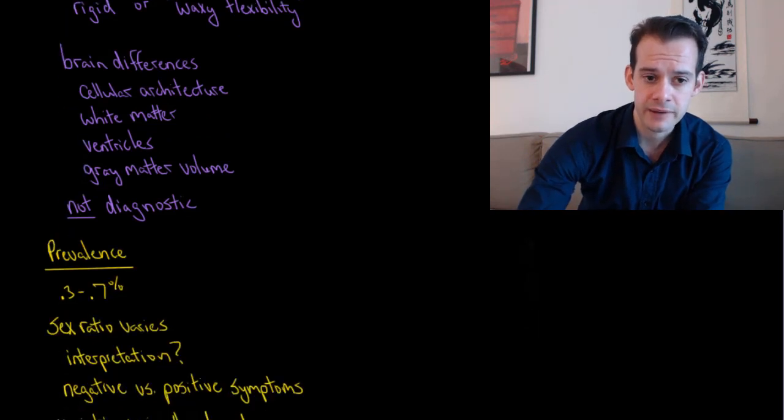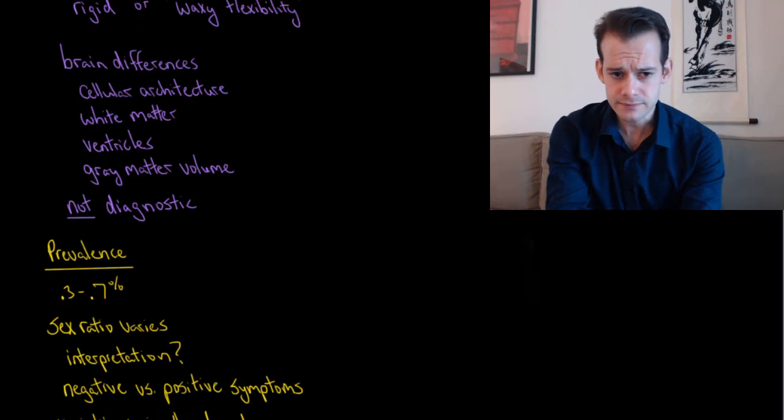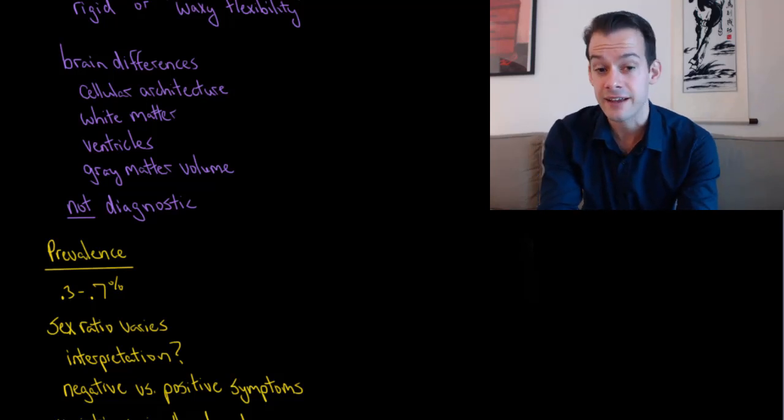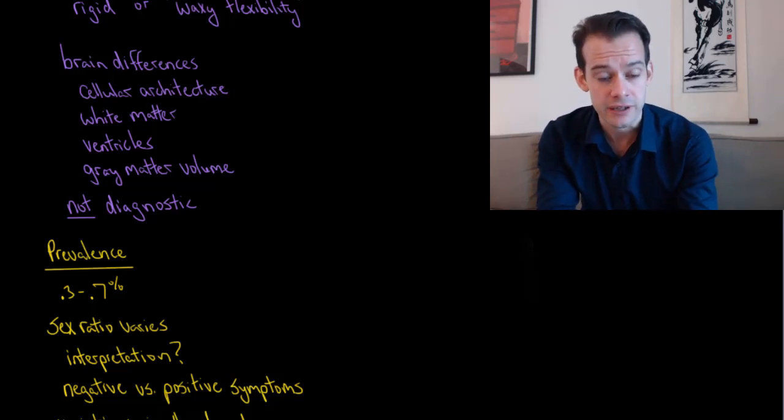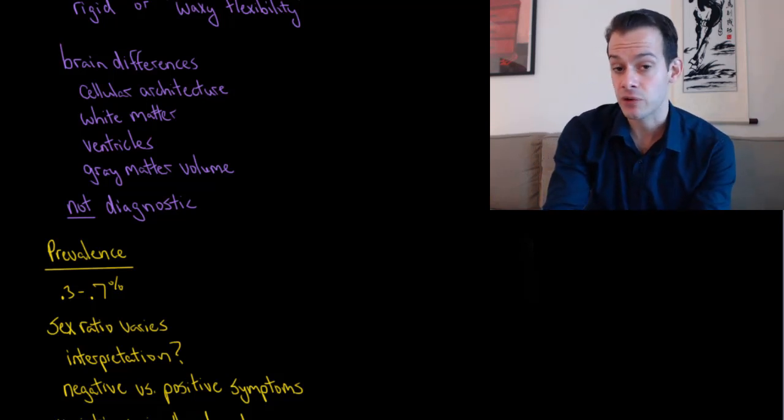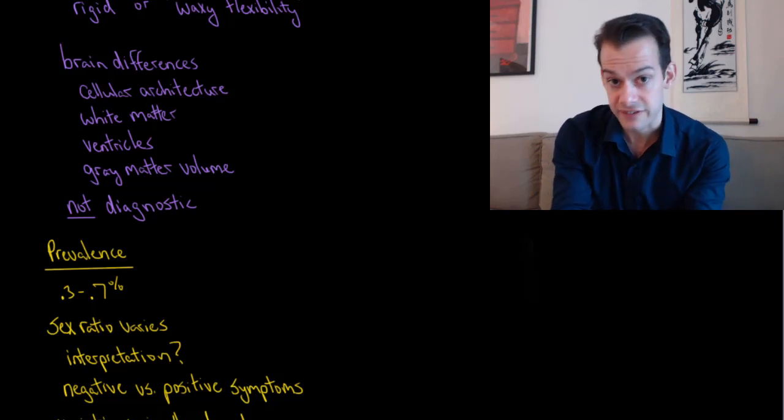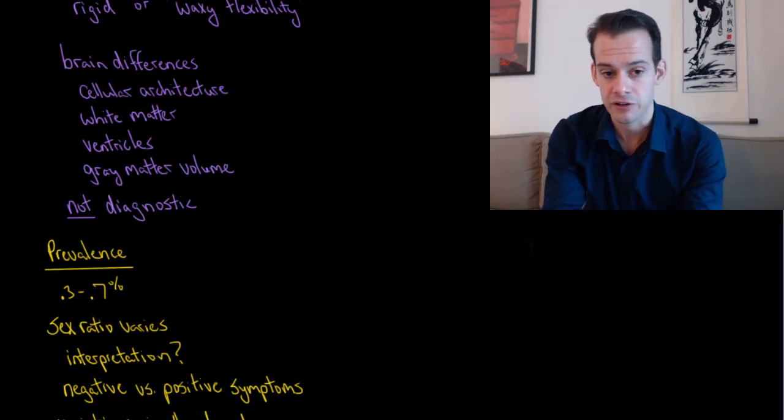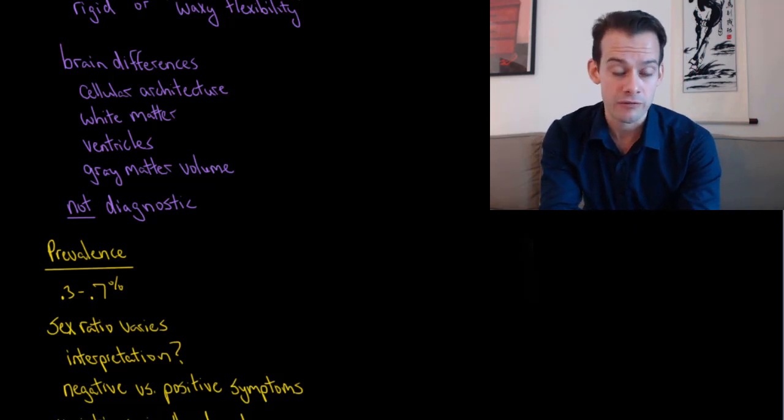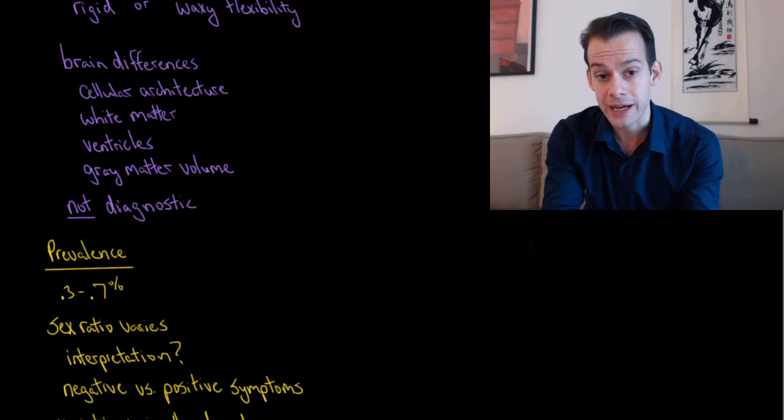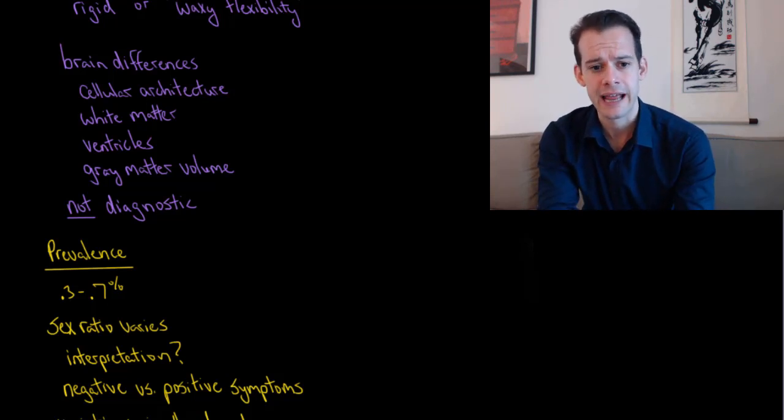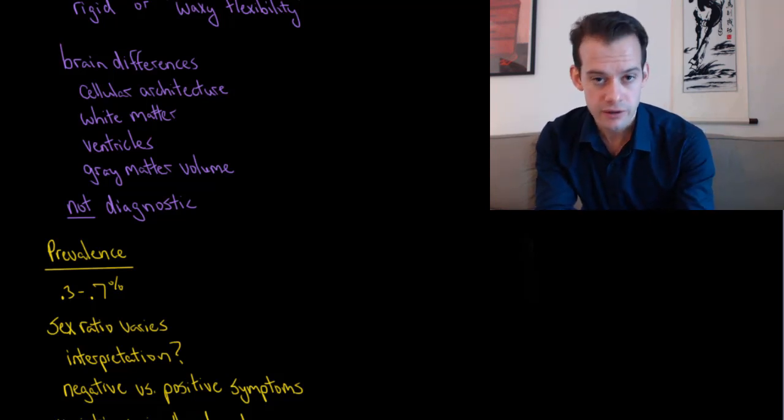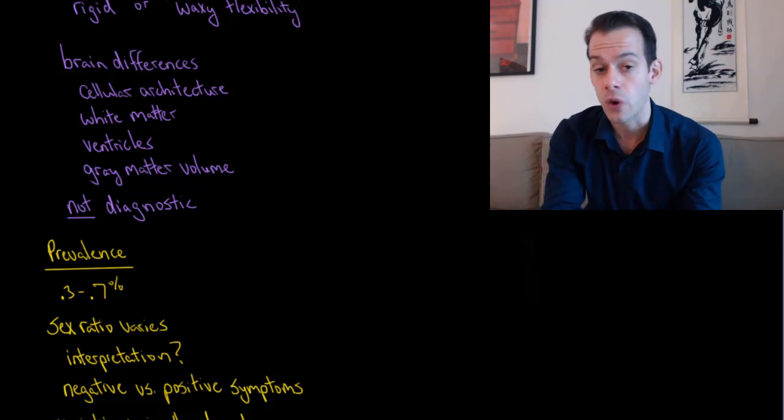We also see some brain differences in patients with schizophrenia compared to healthy individuals. We see a number of these in different types of brain scans. We can see differences in cellular architecture, in the connectivity of the white matter, particularly in the frontal and temporal lobes. We see changes in the ventricles, which are these fluid-filled chambers in the center of the brain. They show enlargement in patients with schizophrenia, although not all patients show this enlargement. We also see reductions in gray matter volume. This is a sort of shrinking of the gray matter on the cortex.